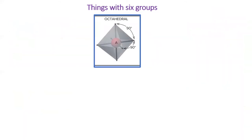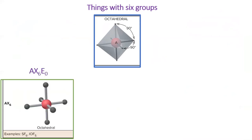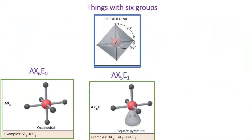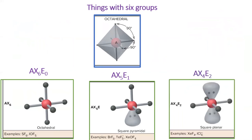Things with six groups have octahedral electron geometry. When all six groups are atoms, the molecular geometry is also octahedral. If one of the things is a lone pair, then the molecular geometry is square pyramidal. If two things are lone pairs, then the geometry is a flat square called square planar. I don't have pictures for the following, but if we were to continue adding lone pairs, we would get another T-shaped molecule, then another linear molecule. However, it's very uncommon you would see those.